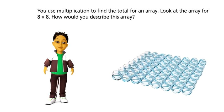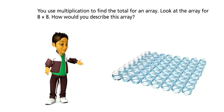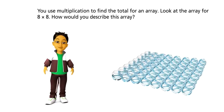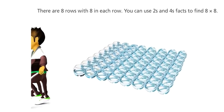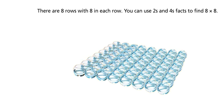You use multiplication to find the total for an array. Look at the array for eight times eight. How would you describe this array? There are eight rows with eight in each row.